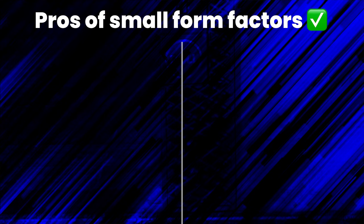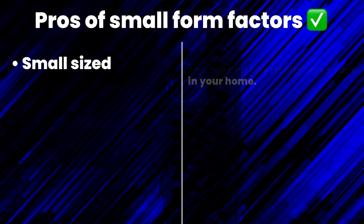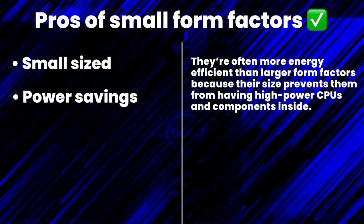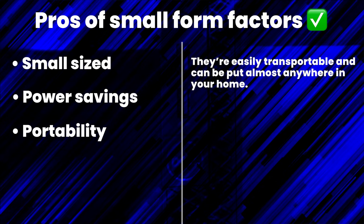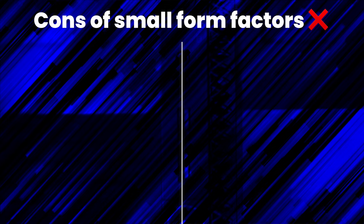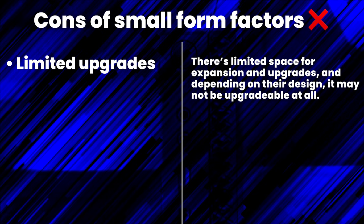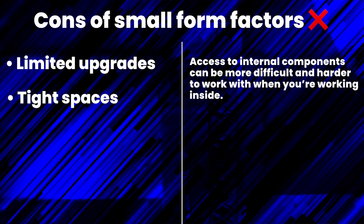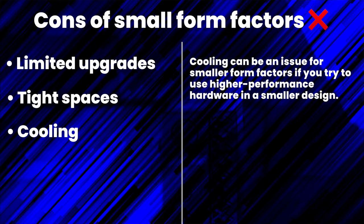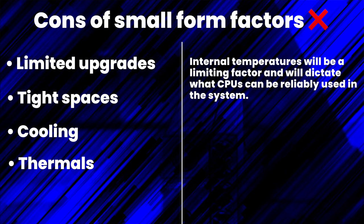Starting with the small category: the pros are that they're compact and take up physically less space in your home; they're often more energy efficient because their size prevents high-powered components; they're easily transportable and can be placed almost anywhere; and they're quieter and less noticeable than larger systems. The cons are limited upgradability with limited space for expansion; tight spaces making access to internals more difficult; cooling can be an issue if you try to use higher performance hardware in a smaller design; and internal temperatures will be a limiting factor dictating what CPUs can be reliably used.